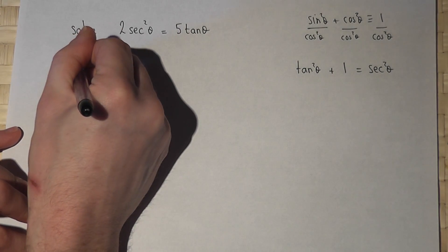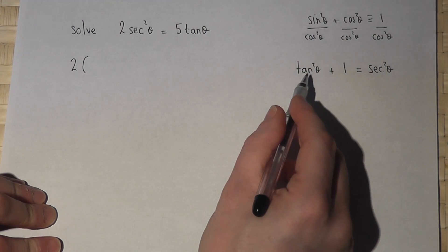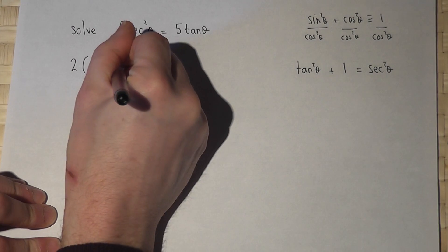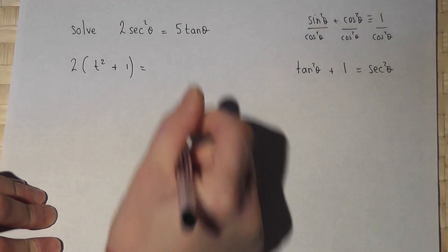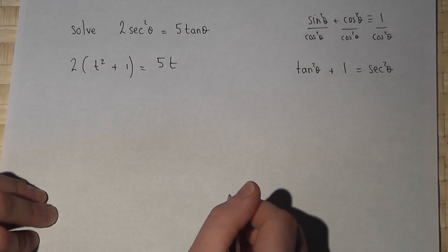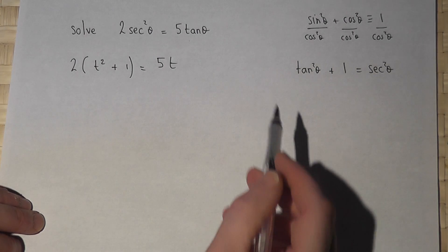This becomes 2 lots of—I'll let tan squared equal t squared, just for the moment—t squared plus 1, and that must equal 5 lots of t. I've let tan theta equal t, just for the moment.